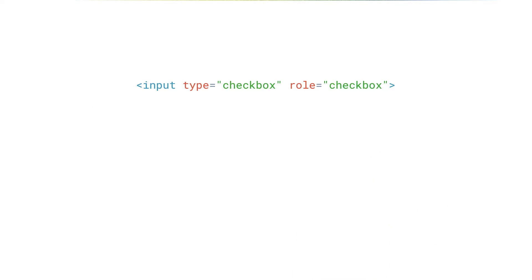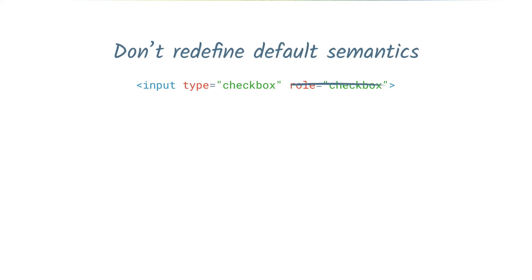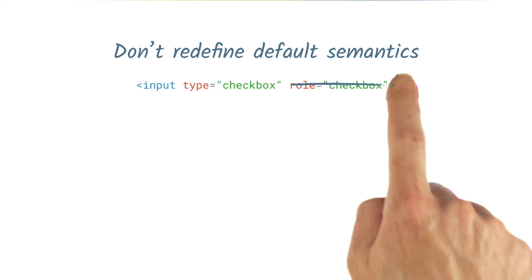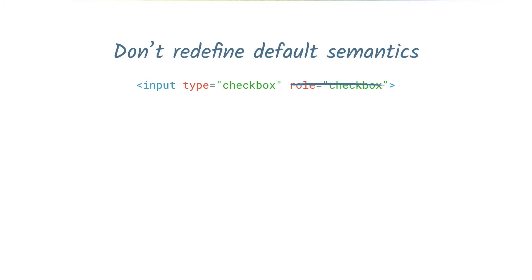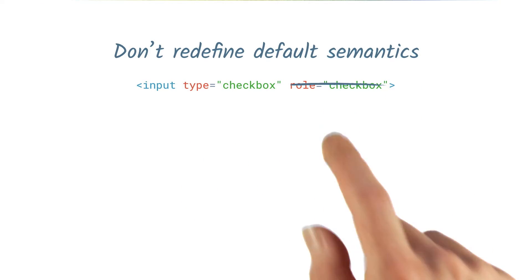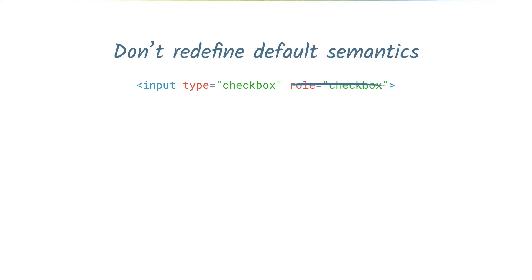This means two things. Firstly, there is usually no need to redefine default semantics. An input type equals checkbox does not need an extra role equals checkbox attribute to be announced as a checkbox. We'll come to an exception to this rule later on.